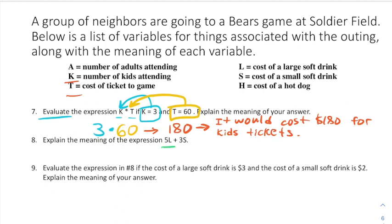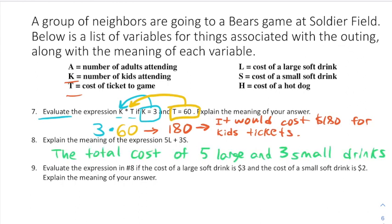Next, explain the meaning of 5L plus 3S. L represents the cost of a large soft drink, so multiplying by 5 represents the cost of 5 large soft drinks. S represents the cost of a small soft drink, so multiplying by 3 represents the cost of 3 small soft drinks. Adding them together gives the total cost of 5 large and 3 small drinks.